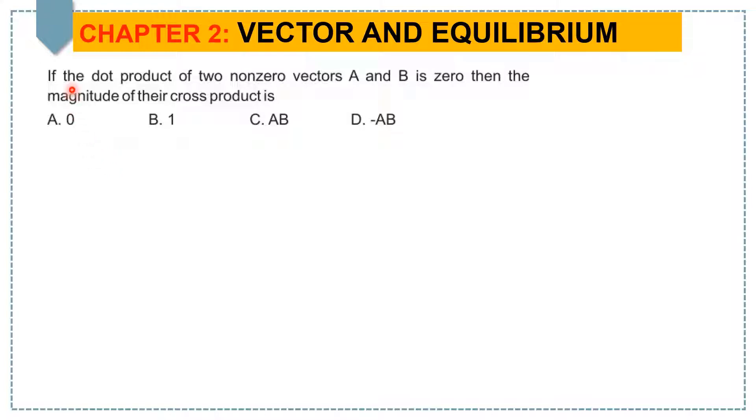Hello students, the question is: if the dot product of two nonzero vectors A and B is zero, then the magnitude of their cross product is? The options are: A. 0, B. 1, C. AB, D. -AB. To answer this question, let's take the dot product of two nonzero vectors.